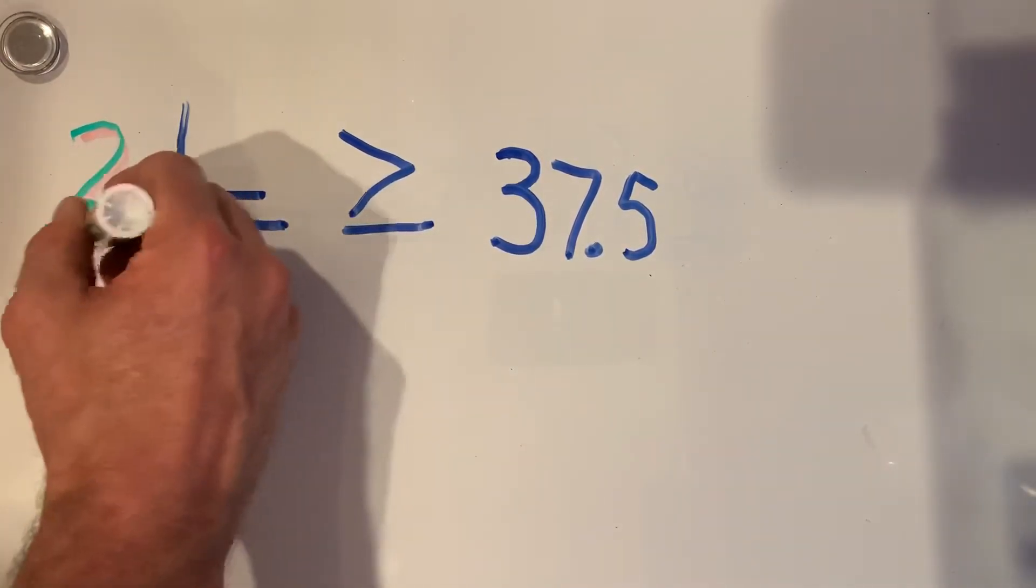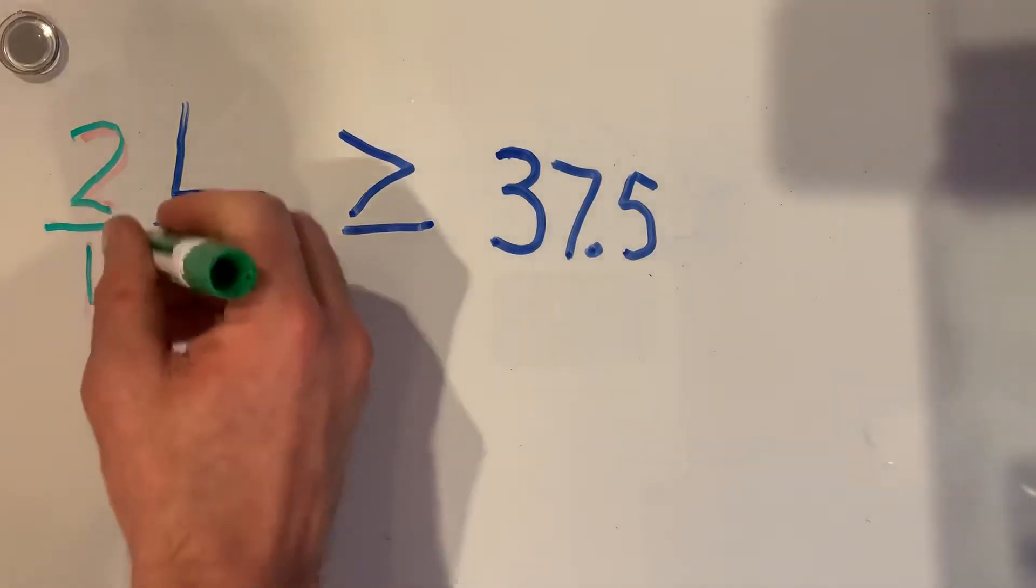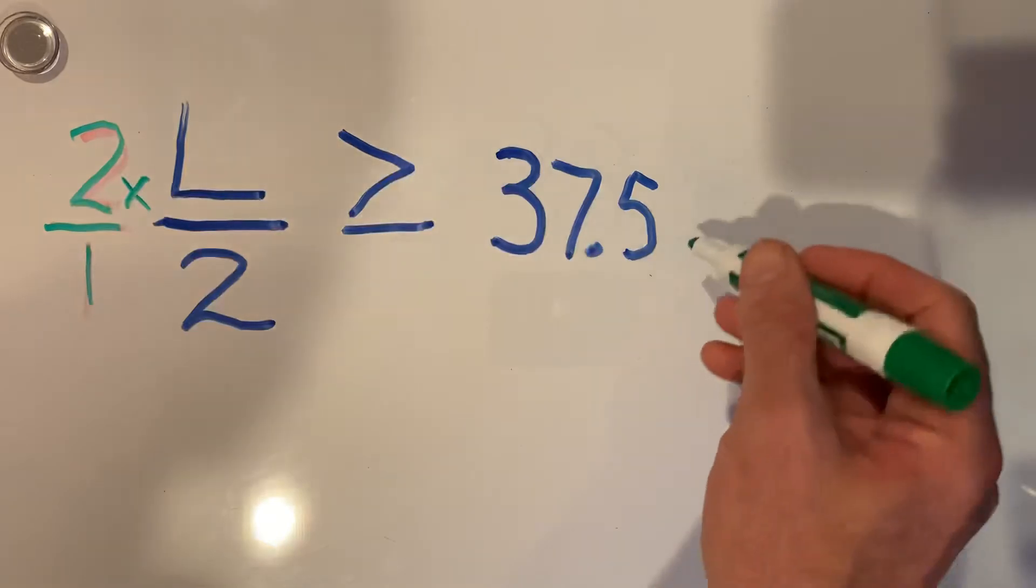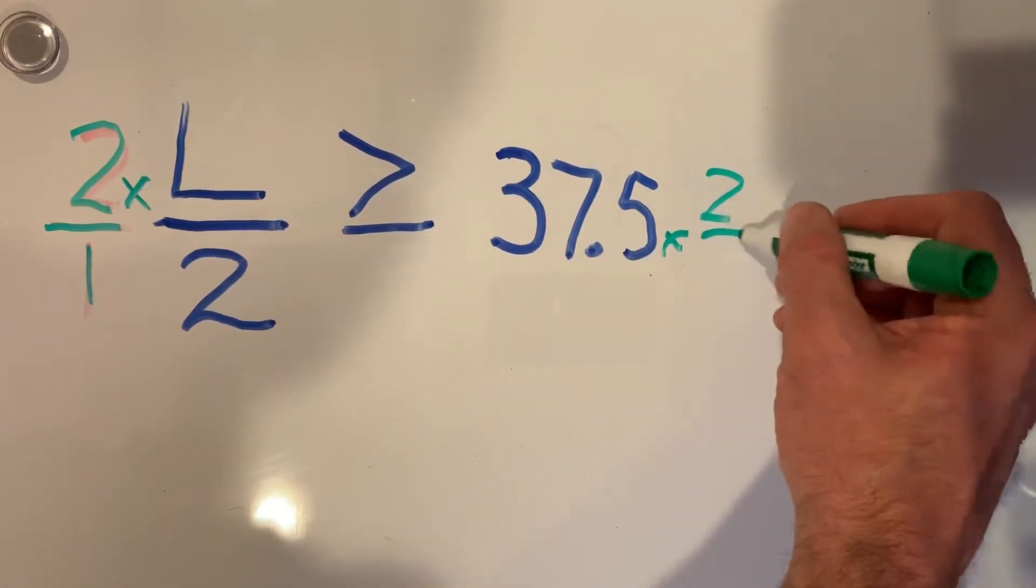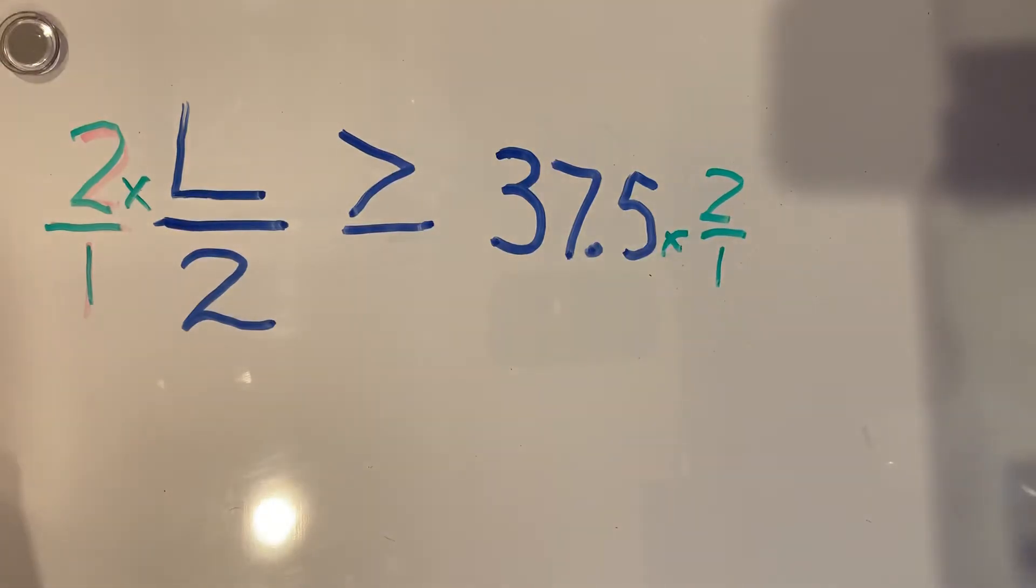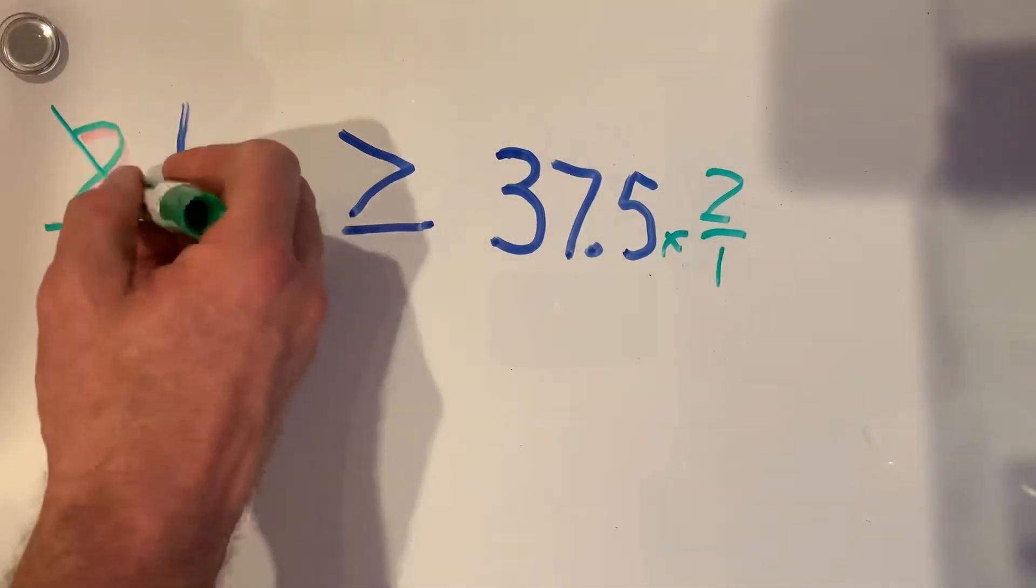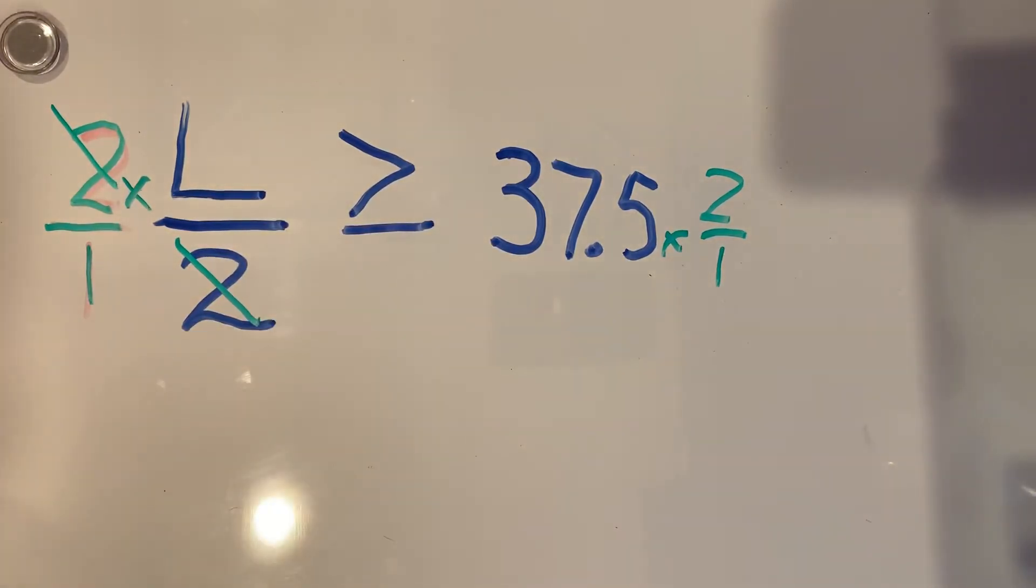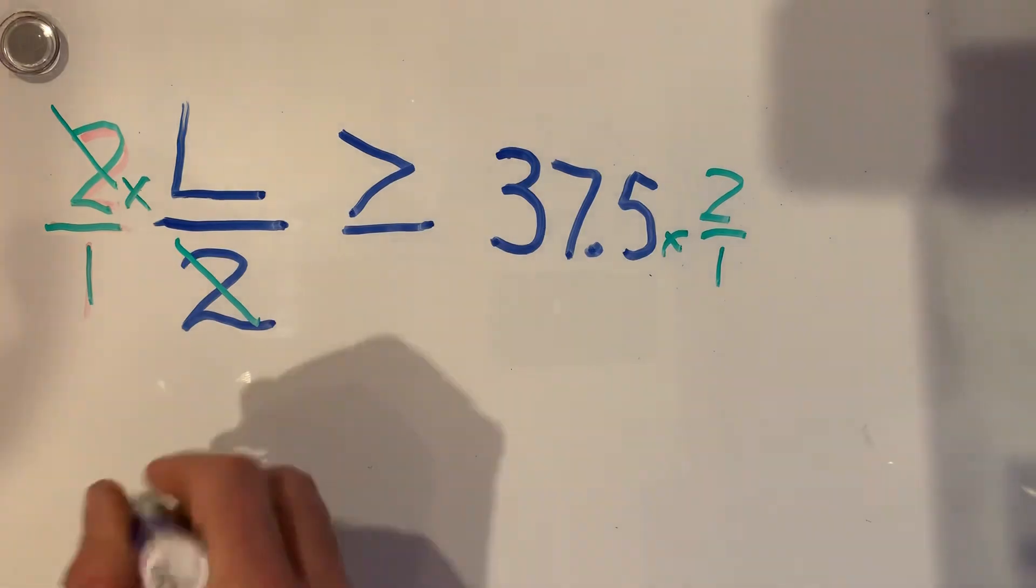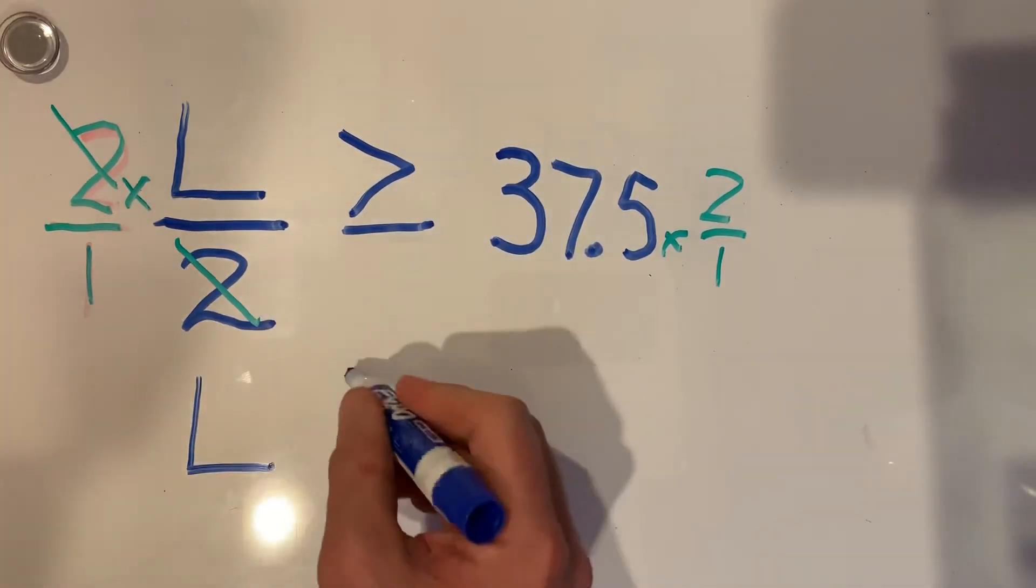So, I multiply times 2 over 1. And if I multiply this side times 2 over 1, I have to multiply this side times 2 over 1. By multiplying this times 2 over 1, the 2's will cancel. And then I'll be left with L, as in the length of the whole board.